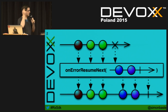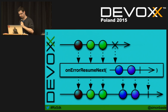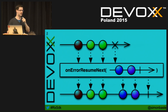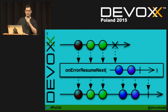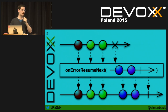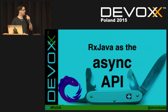That's just touching the surface of the API. You get a lot more operators, and when you learn to use them correctly you get interesting patterns like the exponential backoff I was talking about. We decided to use RxJava as the async API for the Couchbase SDK.